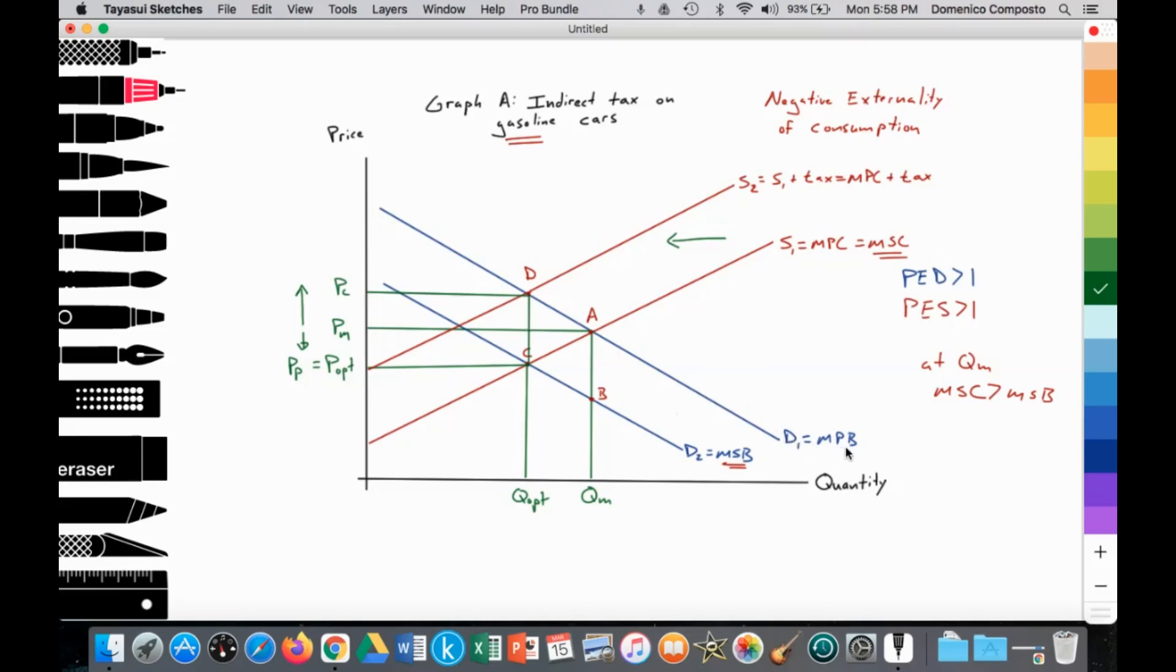We have two downward sloping demand curves in accordance to law of demand. D1 is equal to the marginal private benefit, the household's private consumption of gasoline cars. We notice where MPB equals MPC. It provides a free market equilibrium at point A, providing the equilibrium free market price at PM and the equilibrium free market quantity at QM, where quantity supplied is equal to quantity demanded.